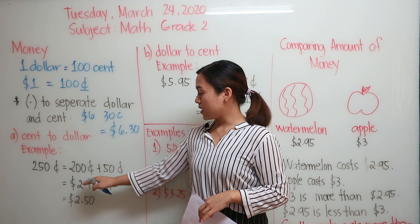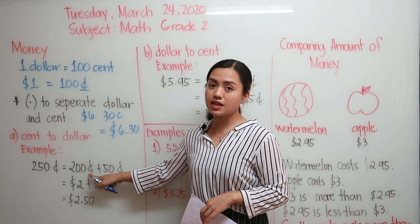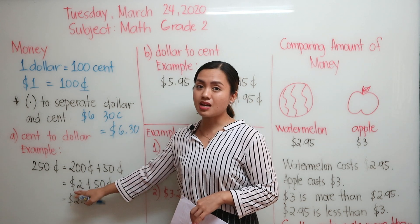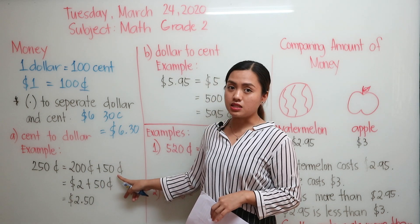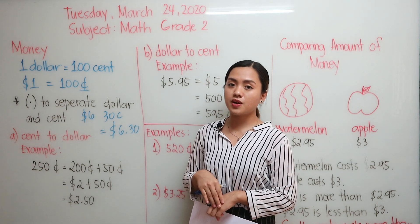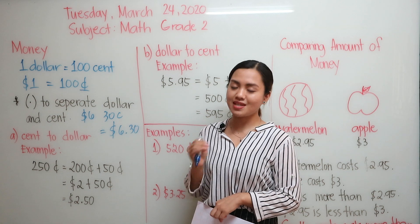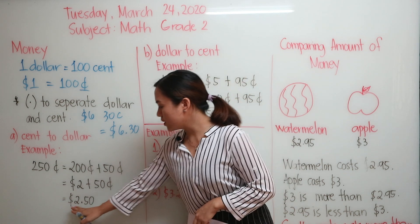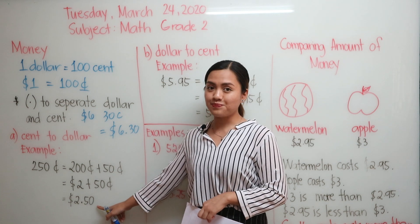Why did I separate it this way? It's because 200 cents is equivalent to $2 as a whole, plus 50 cents. And like what we said, in order for us to separate dollars and cents, we have to use a decimal point. So it will be $2, then the decimal point, then 50 cents.